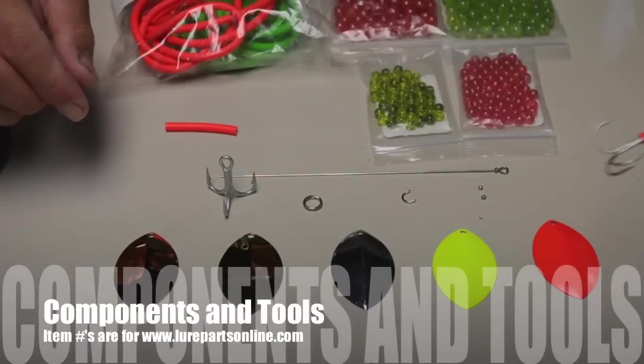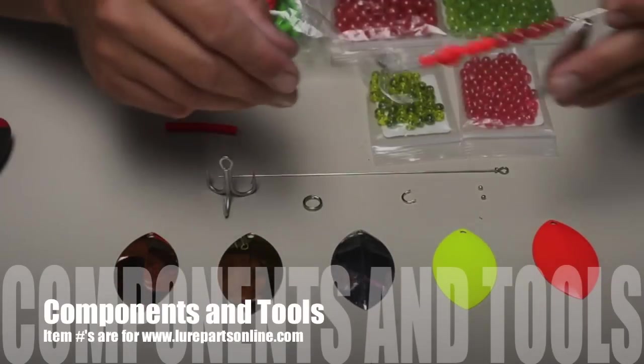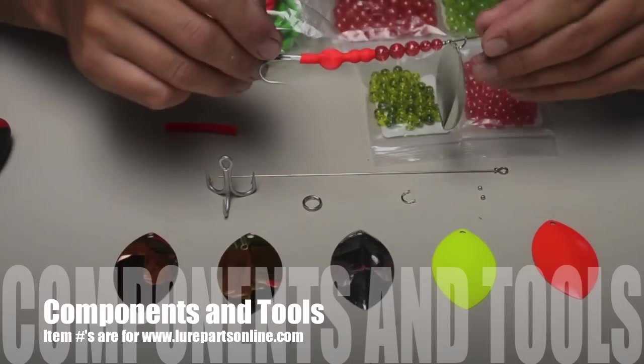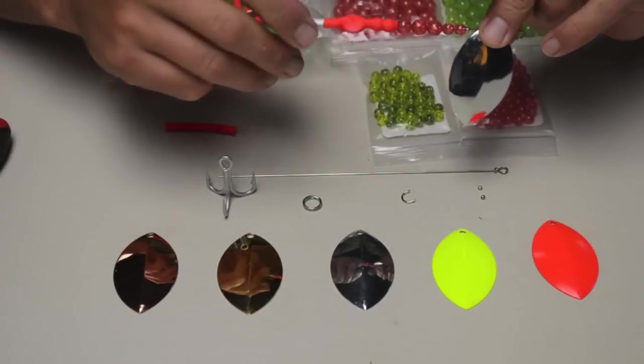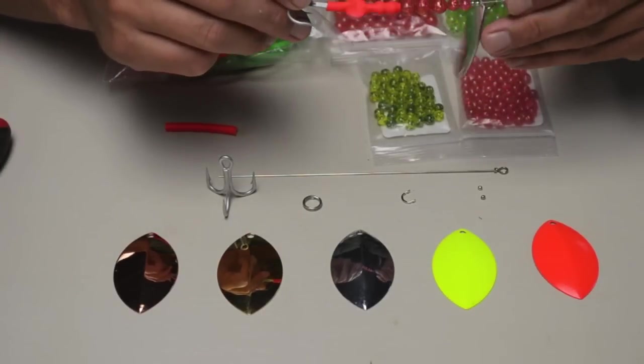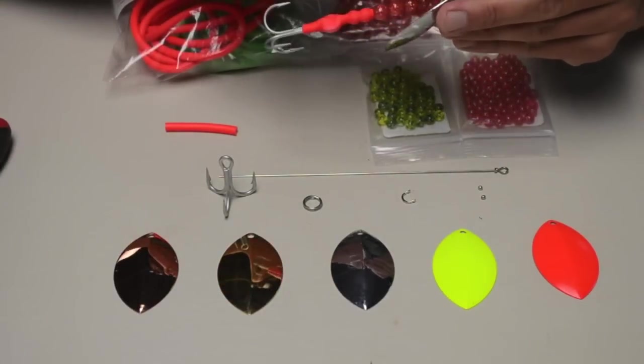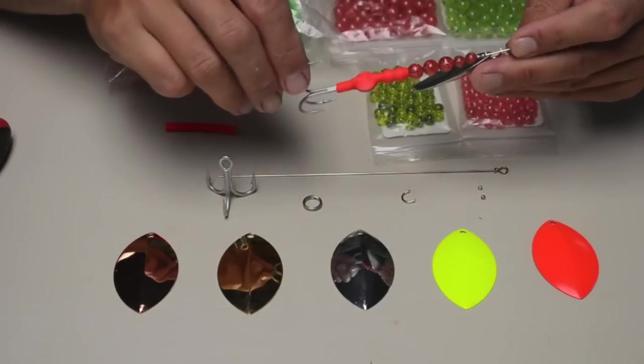Okay, so today I'm going to make a pink and silver spinner. This will be good for coho or steelhead or even chinook in the fall. I'm going to cover the components starting from the top of the spinner and working down to the bottom.